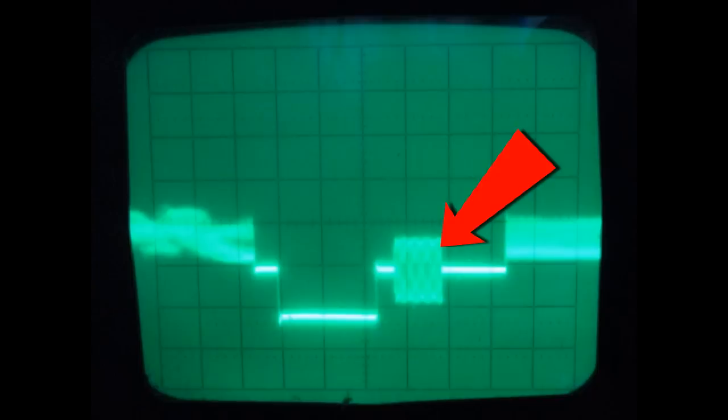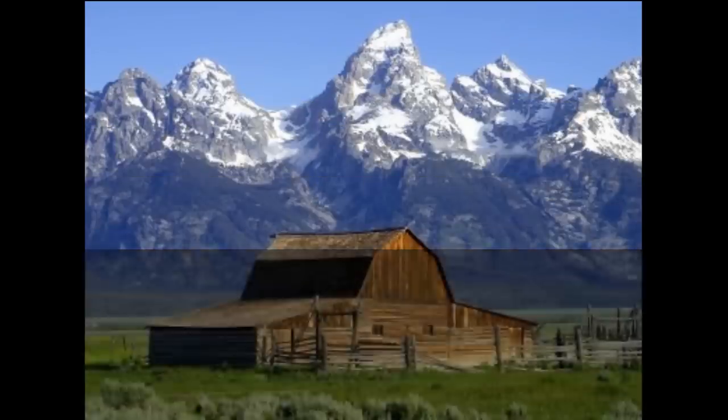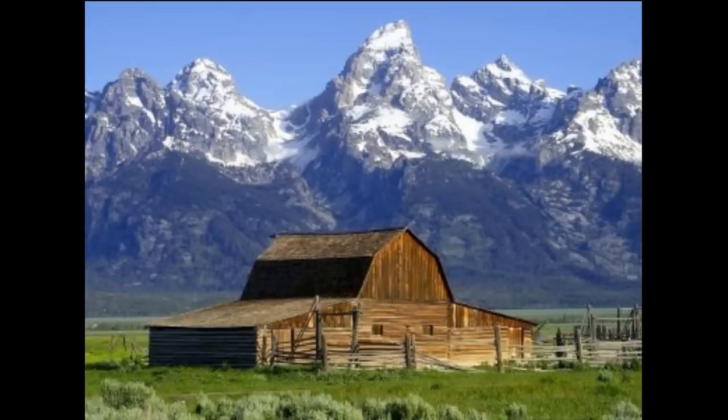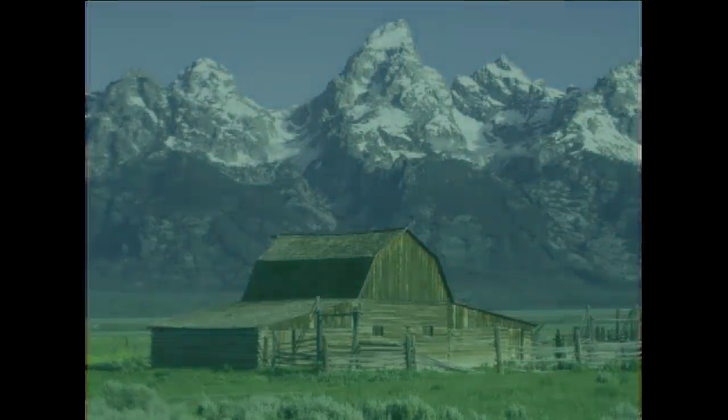This is the important part, as it effectively tells our television how to create the colour image. The colour burst synchronises a subcarrier signal containing the colour data, the encoded format of which relies on the YUV colour space, providing chrominance data to go with the luminance value. The chrominance data carries blue and red values, which are subtracted from the luminance figure to provide a total for green.